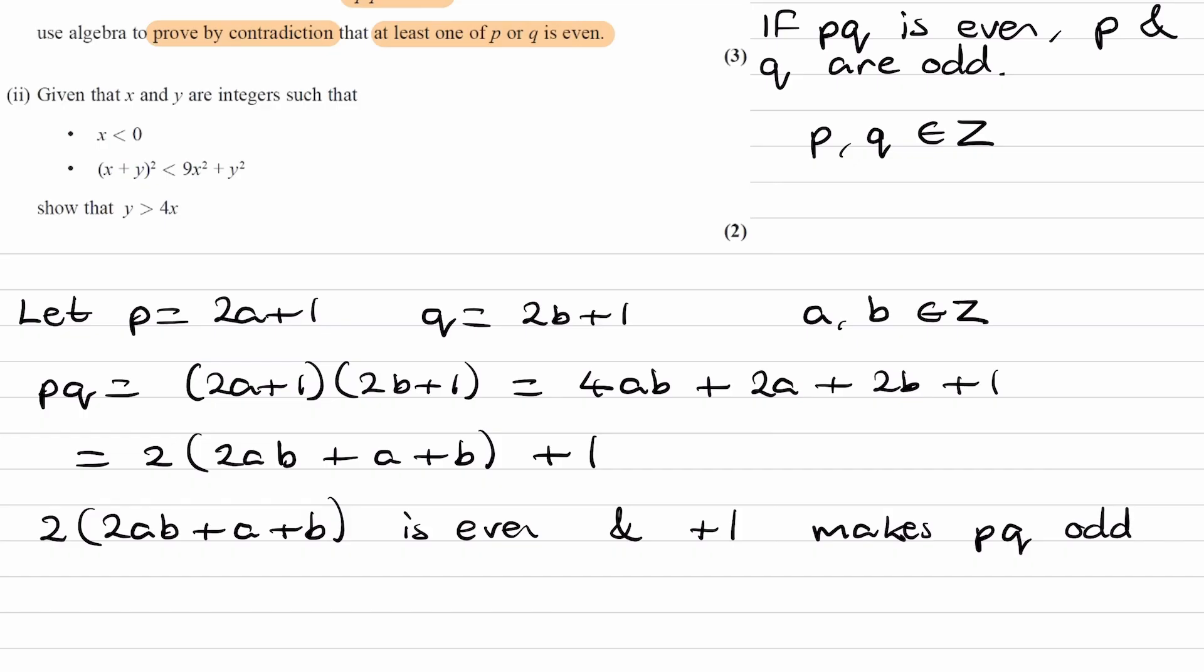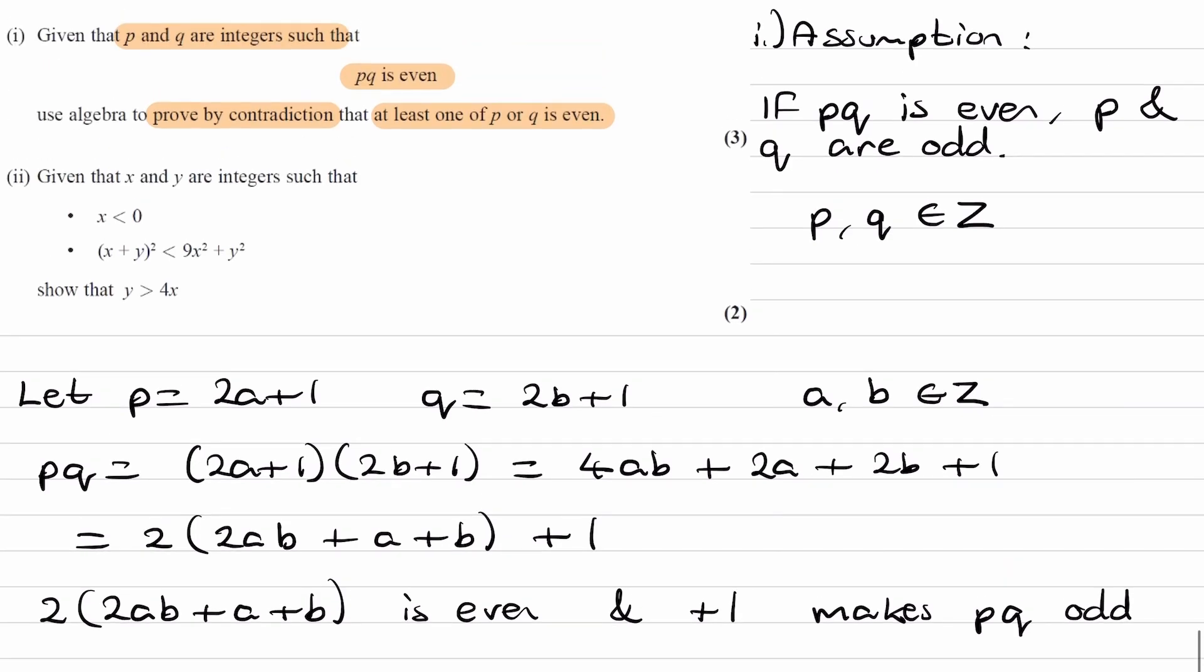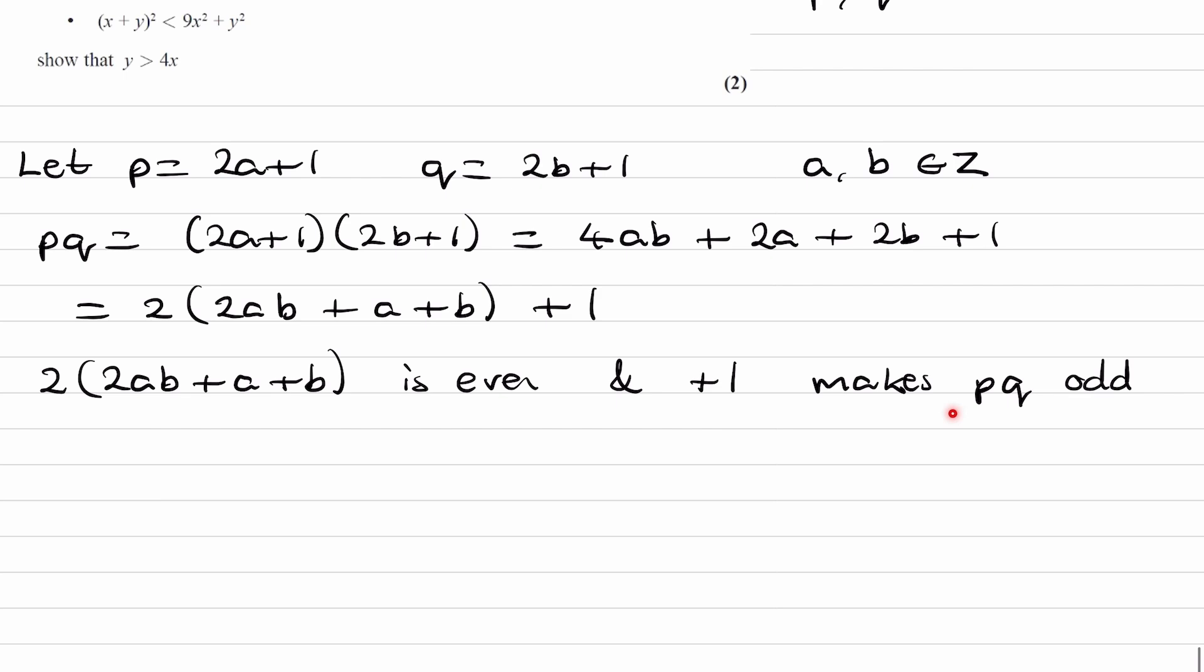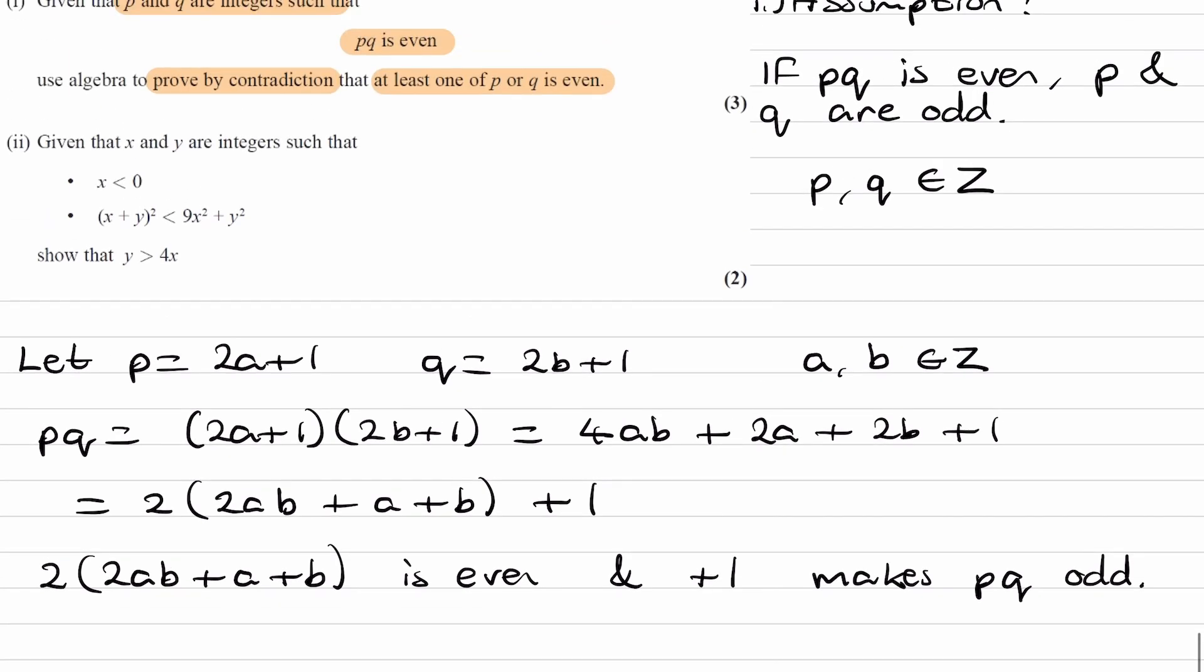And that contradicts our assumption. Our assumption is that PQ is even, but we've just found that PQ is odd. So there's our contradiction. So therefore, this statement doesn't work. So if PQ is even, that means that at least one of P and Q must be even. They can't both be odd.